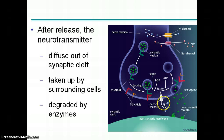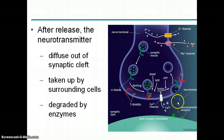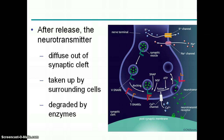Once the neurotransmitters have served their purpose, different options are available for what happens next. The neurotransmitter can simply diffuse out of the synaptic cleft and have no more impact. It could be broken down by enzymes, or it can be reabsorbed back into the presynaptic neuron — and that's what happens with drugs like Prozac.